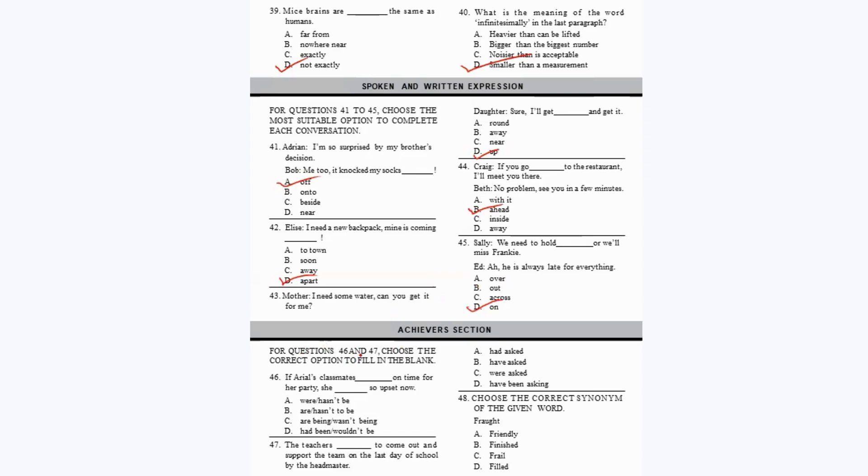Now the Achiever Section — each question carries three marks. Question 46: 'If Ariel's classmates dash on time for her party she dash so upset now.' Using the correct conditional: 'If Ariel's classmates had been on time for her party, she wouldn't be so upset now' — option D. Question 47: 'The teachers dash to come out and support the team on the last day of school by the headmaster' — 'were asked' — option correct.